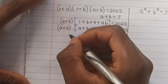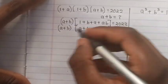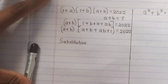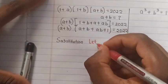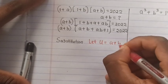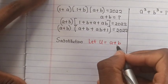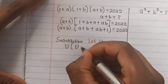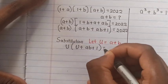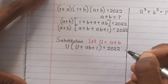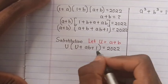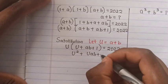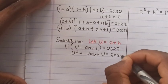Next, we do substitution. We let u = a+b. Then u will substitute here, here, and here. So it will be u(u + ab + 1) = 222. Then we multiply u into the bracket: u² + u·ab + u = 222.